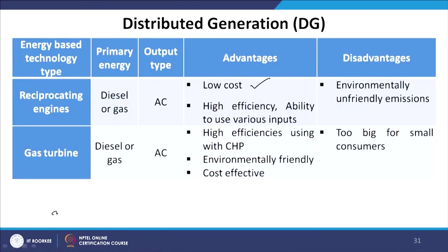The gas turbine uses diesel or gas as its primary energy source with an AC output type. Major merits are high efficiency using the CHP concept, environmentally friendly, and cost effective. But it is quite large for consumers.